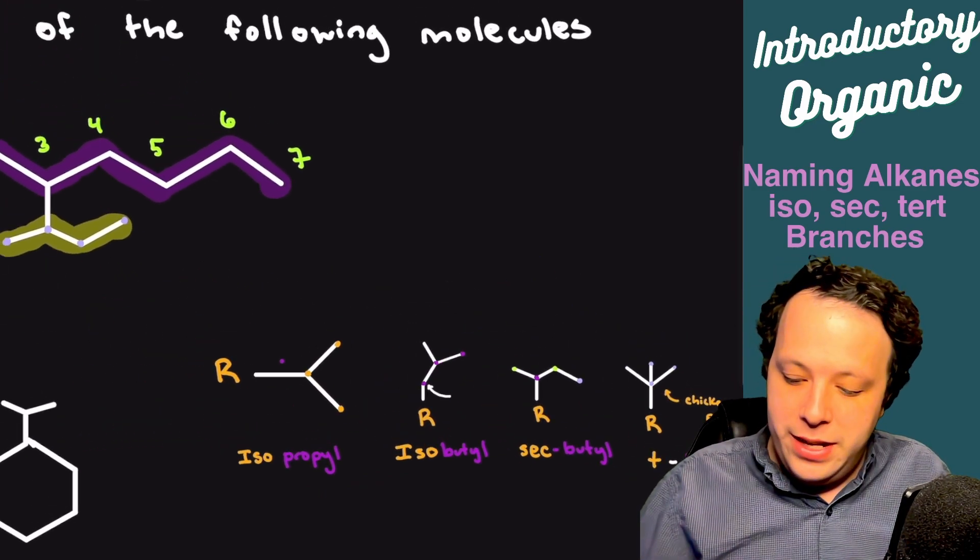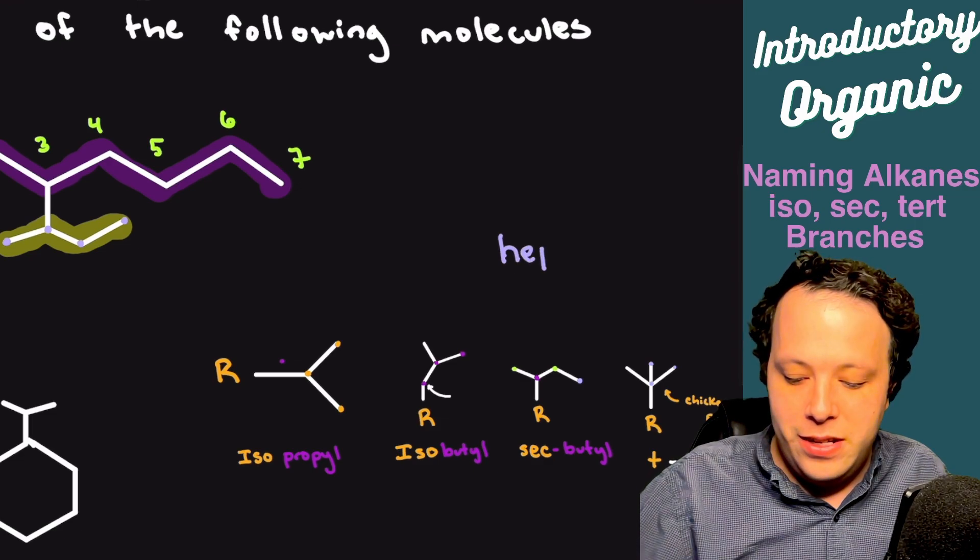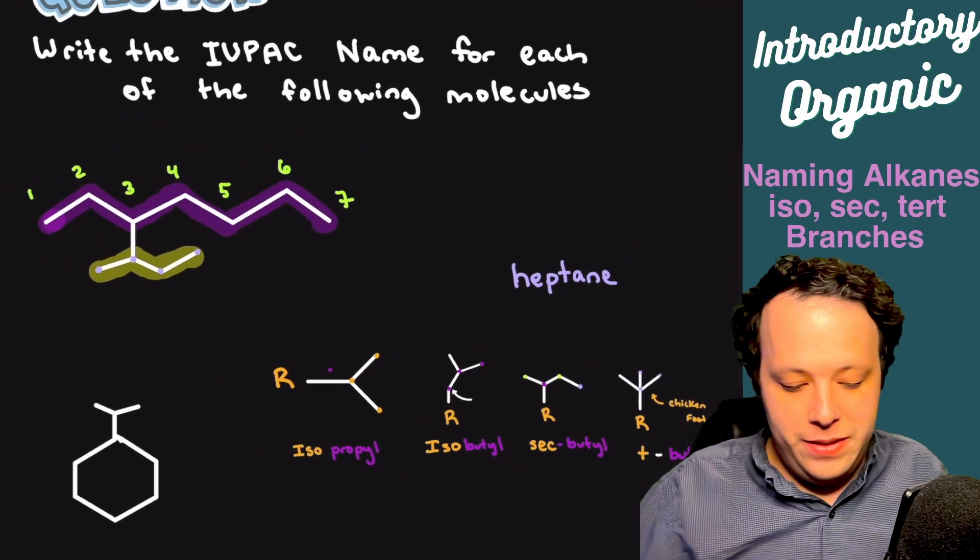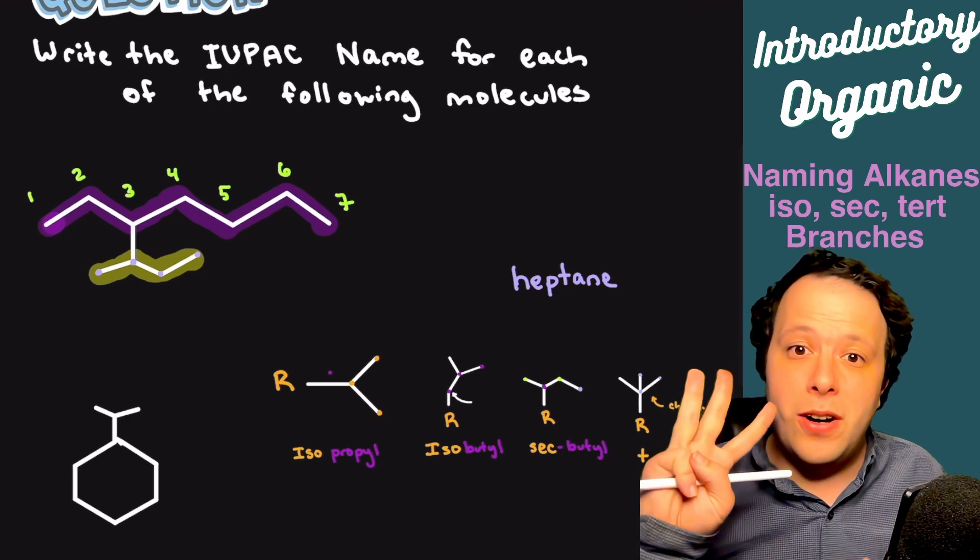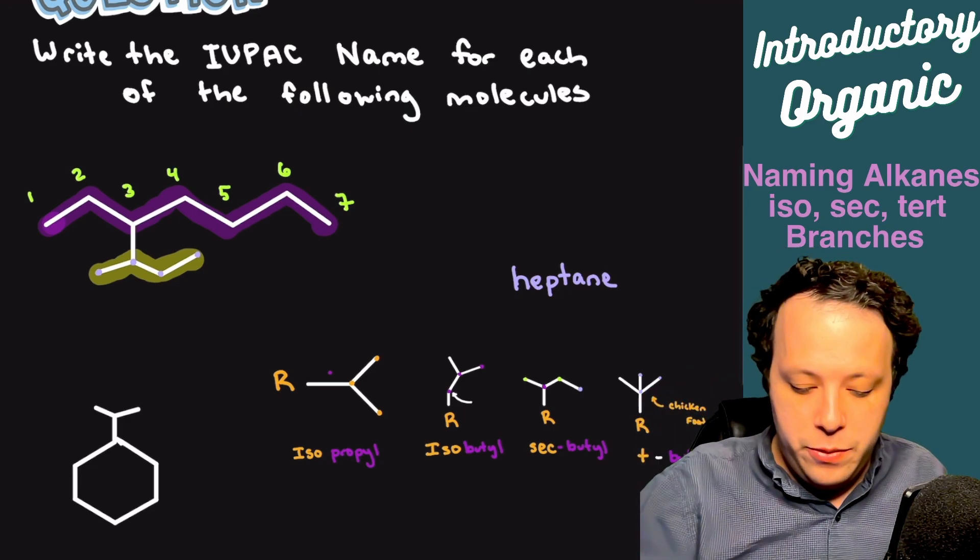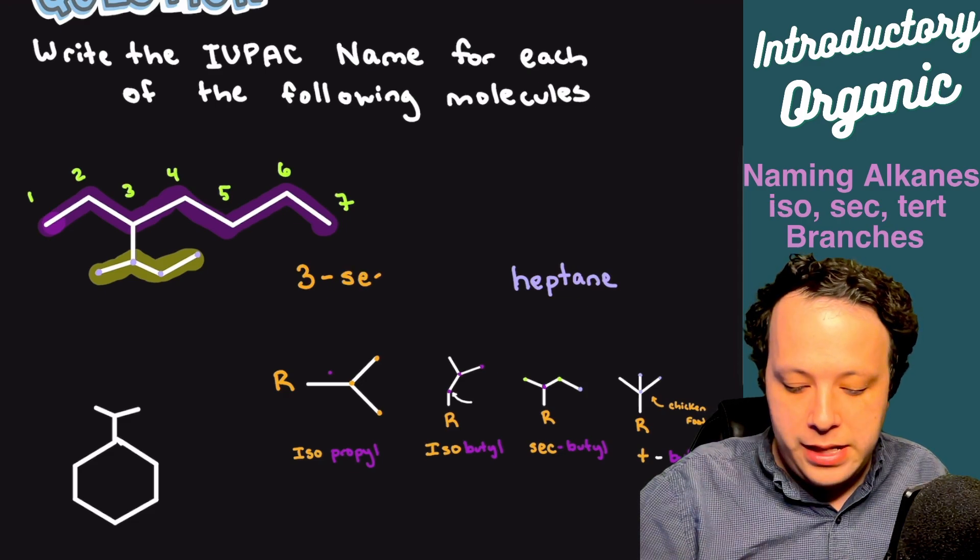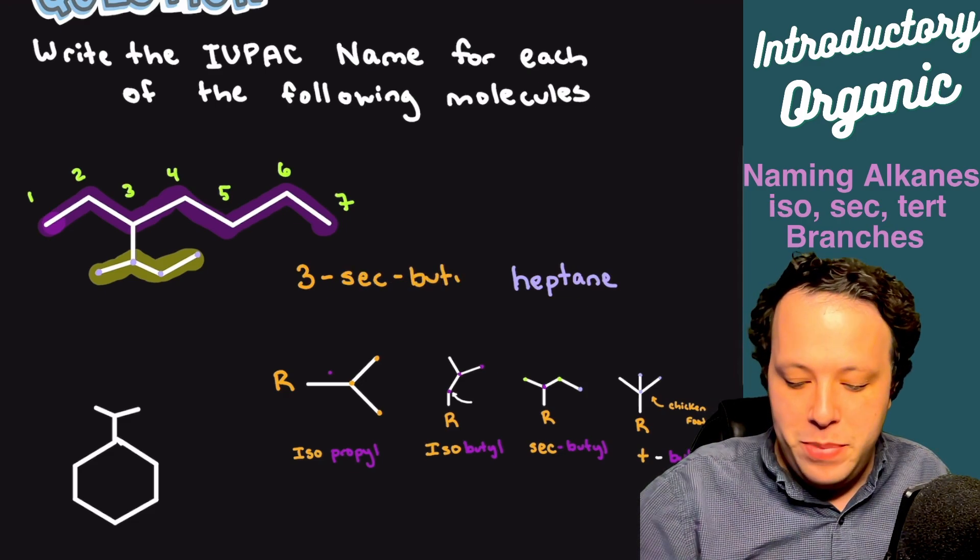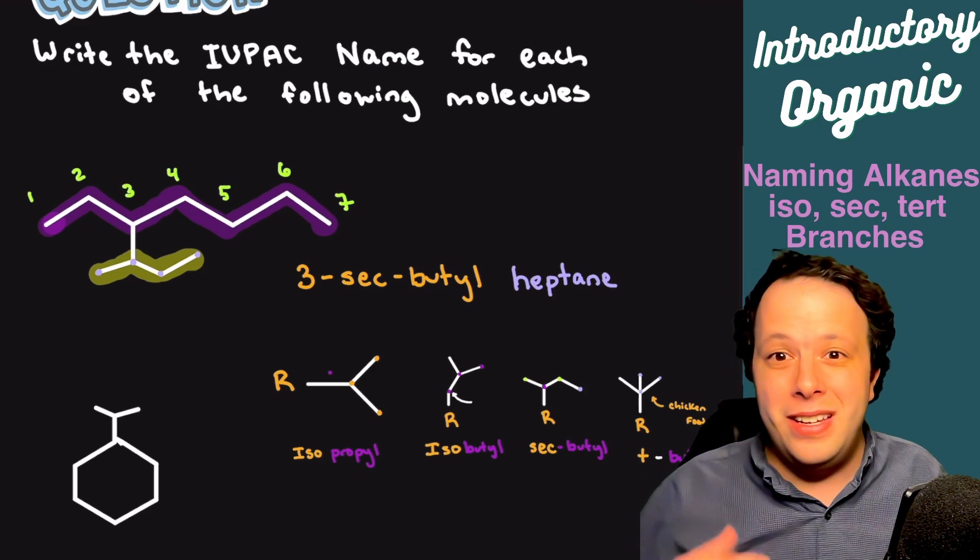Let's write down our name. The first thing is to write down the parent chain, which was seven. So it's going to be heptane for seven. Then we have our branch which is located at carbon number three. So we take three and then we'll say three-sec-butyl. The name would be three-sec-butyl heptane.